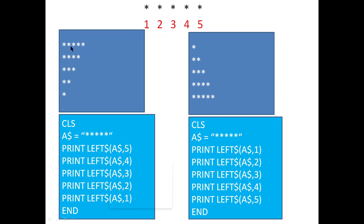In this pattern we have five asterisks on the first line, then four, then three, then two, then one. You can see the asterisks come from the left-hand side in every row. By looking at this, you can say we can use the LEFT$ function. Every time the asterisk is available at the left-hand side, so we use LEFT$.